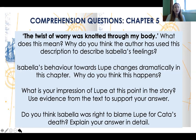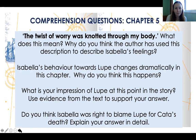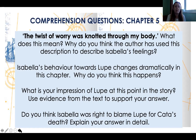Chapter five question one: 'The twist of worry was knotted through my body' — what does this mean and why do you think the author has used this description? She's not describing feelings directly but describing a kind of physicality. Why does she do that and why is it effective?